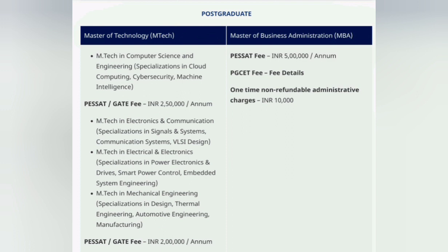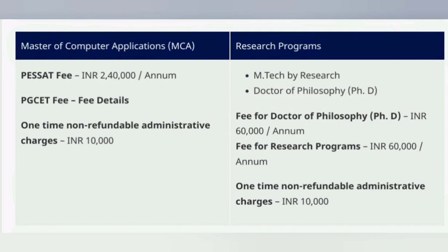For MBA through PESET, the fees is 5 lakhs per annum, making it 10 lakhs total for the two-year MBA program. For MCA, also through PESET, the fees is 2.4 lakhs per annum. For the two-year MCA program, it comes to close to 4.8 lakhs plus a 10,000 non-refundable fee, making it approximately 5 lakhs total. This 10,000 non-refundable amount applies to every course.